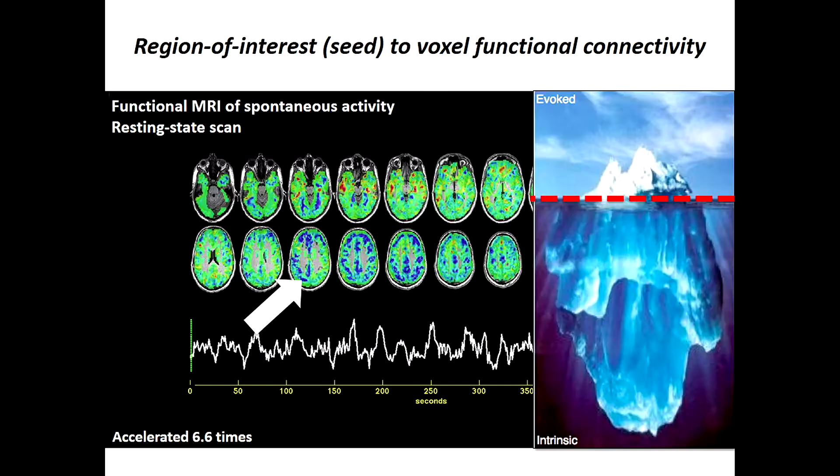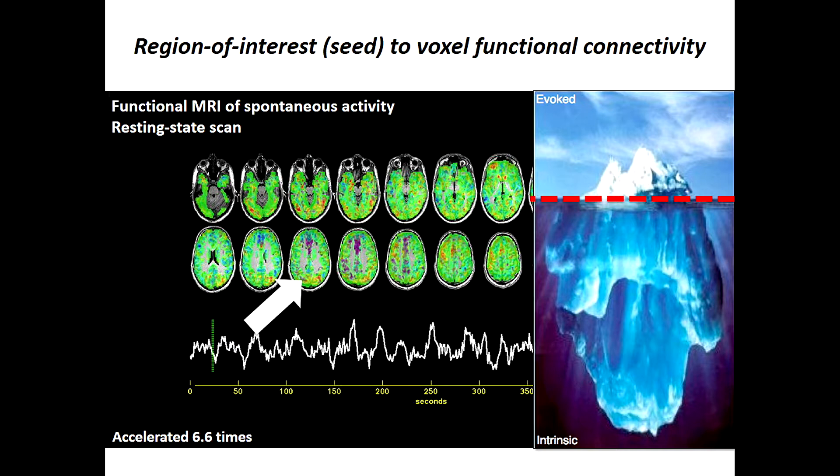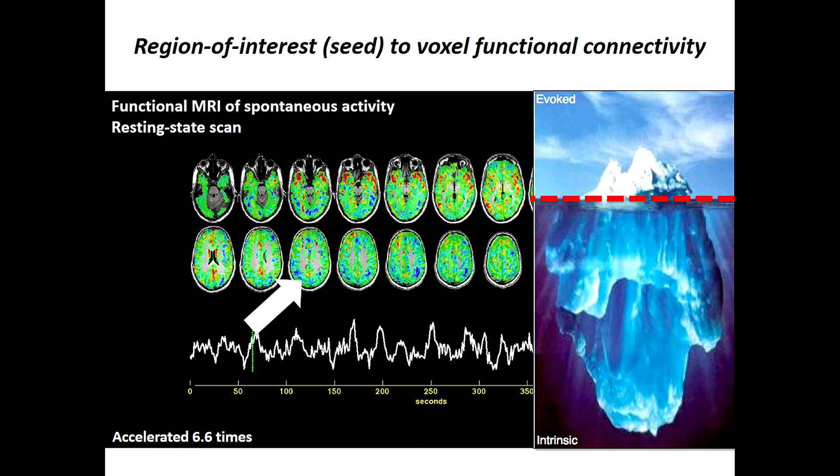If we go back to this experiment by Biswal, you can see finger tapping and resting state on the left and respectively right side of the screen, and you can see how nicely the motor cortex is illustrated in both. Functional MRI of spontaneous activity, which is resting state, is nicely depicted here and you can see how rich it is in the seed area of the brain. The intrinsic activity is much more important than the task-based, which is rather the tip of the iceberg.